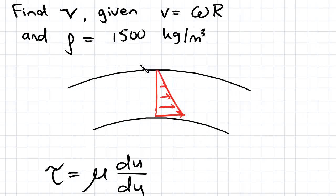Because there are no slip conditions at the boundaries, at this interface we have the same velocity as the inner cylinder. And at the outer cylinder interface, we have the velocity of the outer cylinder, which is zero.